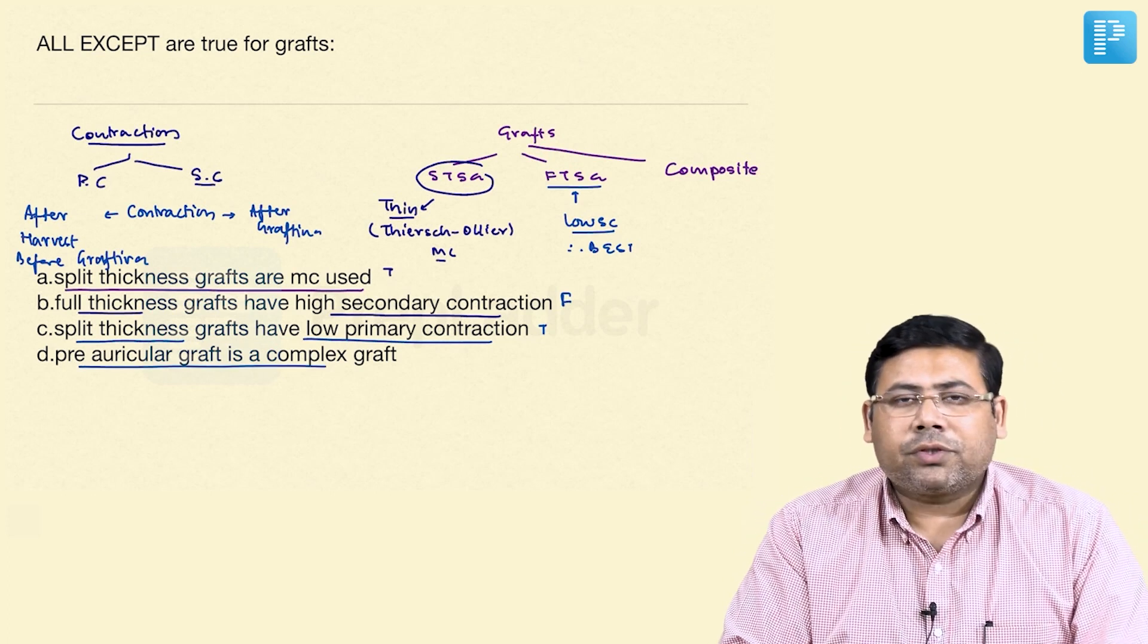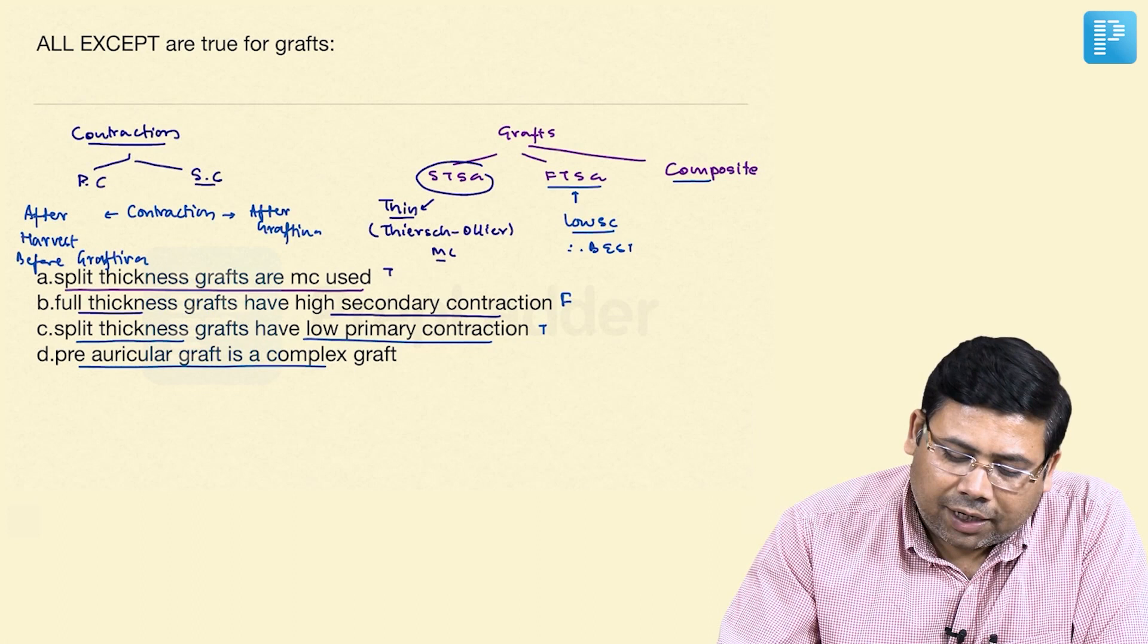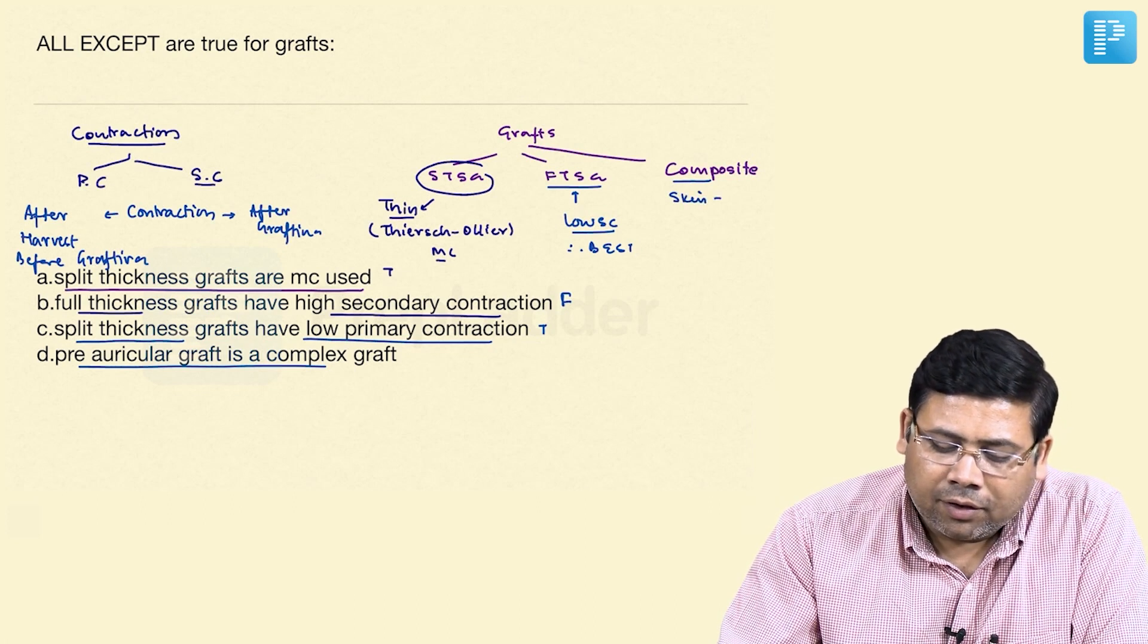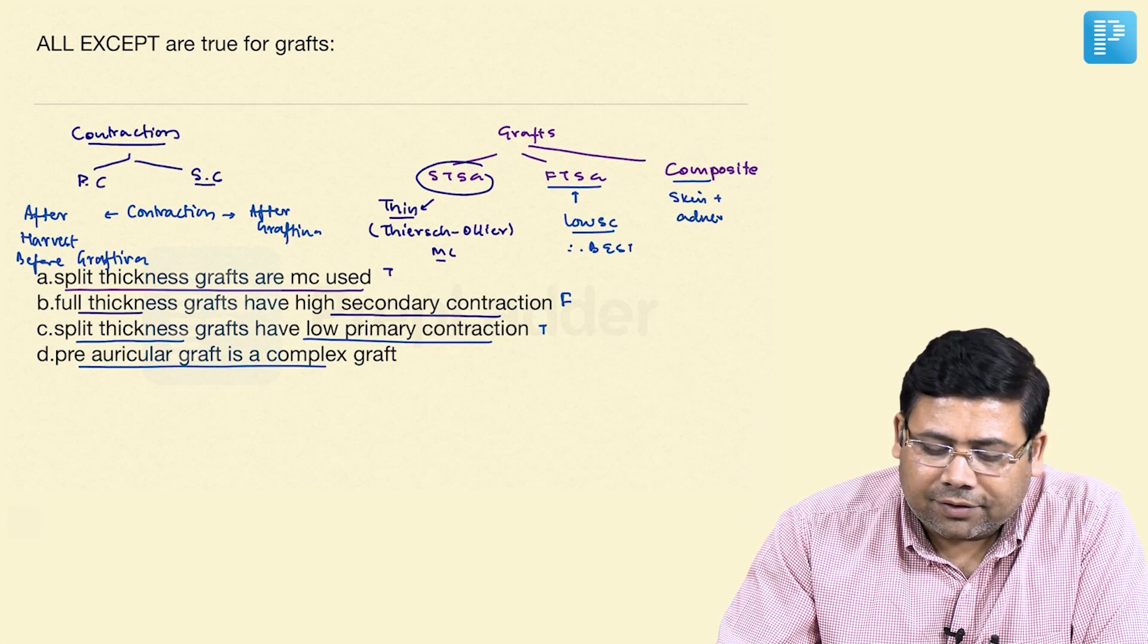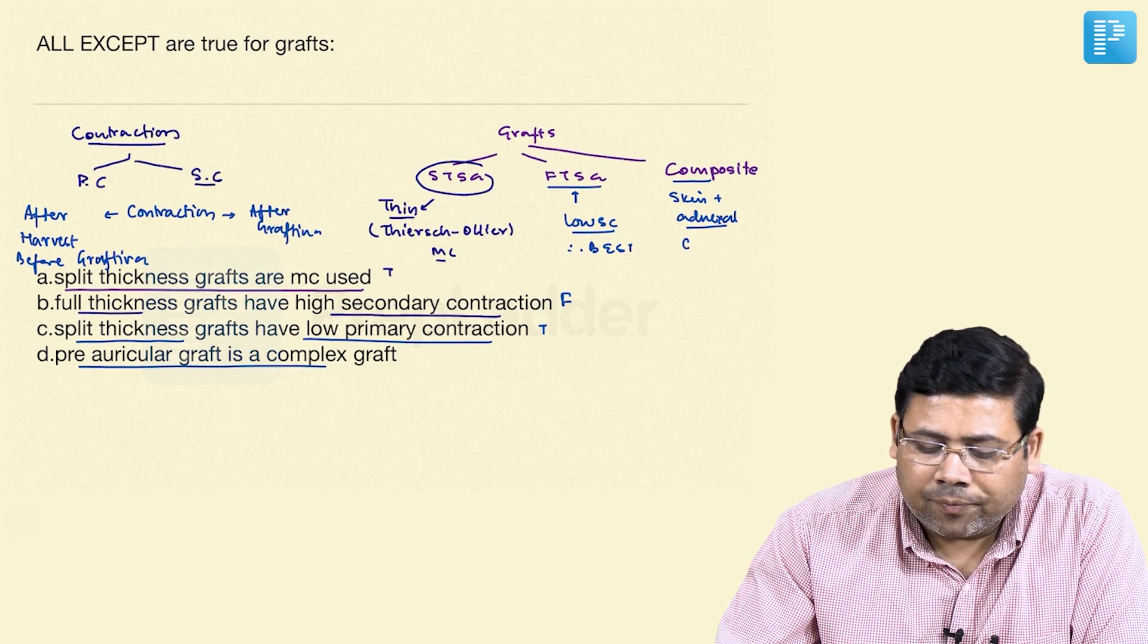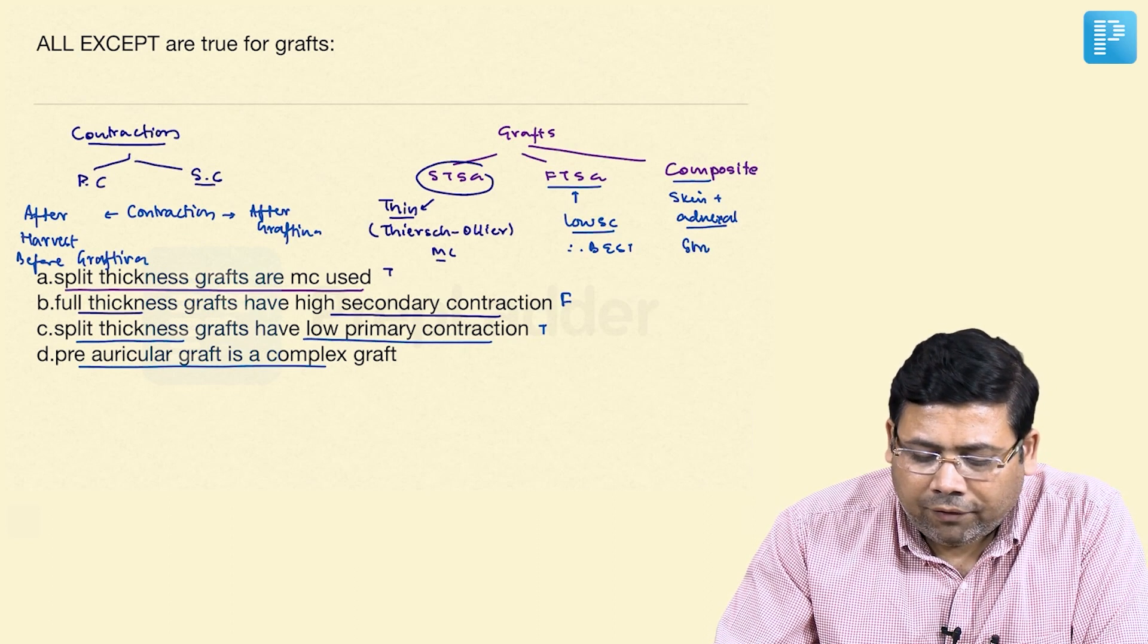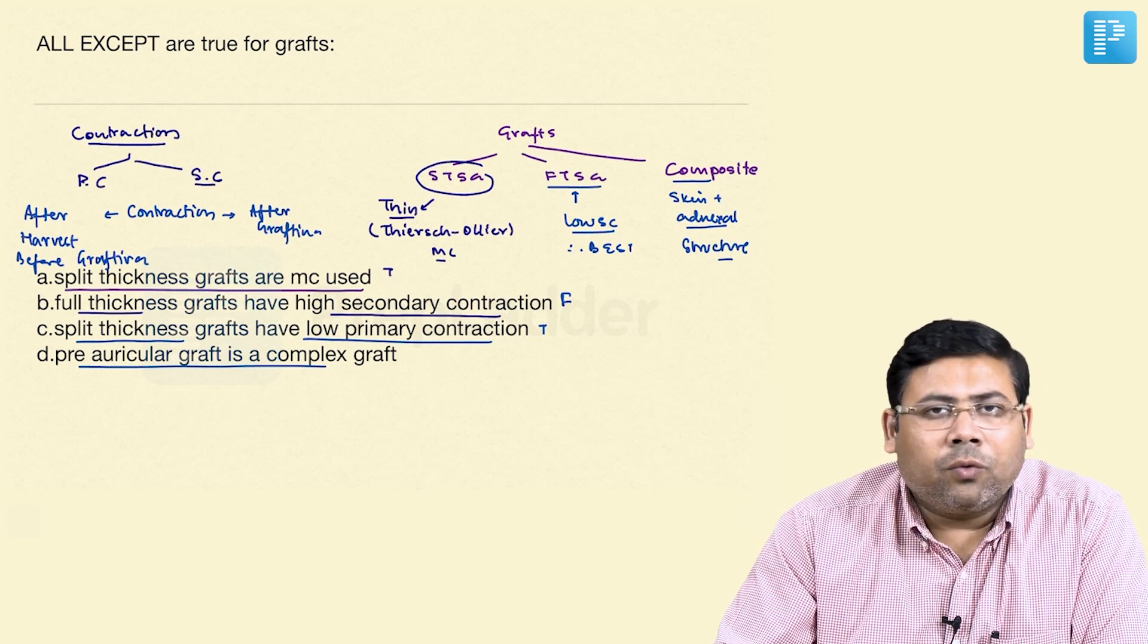Pre-auricular graft is a composite graft. Remember, composite grafts are grafts where along with the skin, you also use adnexal structures like cartilage. When we talk about the tip of the nose...